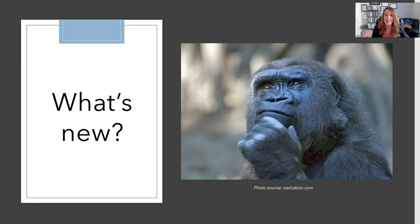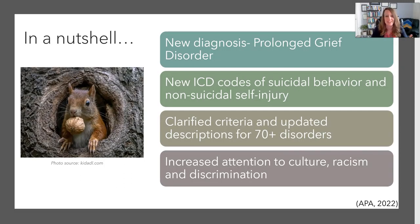I know all versions of the DSM have inspired vigorous discussions and lively debate. I'm not here to analyze the merits or provide a critique, but to describe what is and summarize what we have. In a nutshell, the highlights are: there's a new disorder called prolonged grief disorder; there are new ICD codes for suicidal behavior and non-suicidal self-injury; we're now only using the ICD-10 instead of the 9; criteria have been clarified including updated information to capture children's experiences more precisely; and there's increased attention to culture, racism, and discrimination throughout.